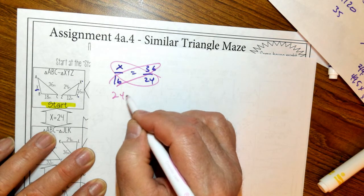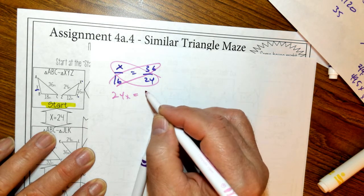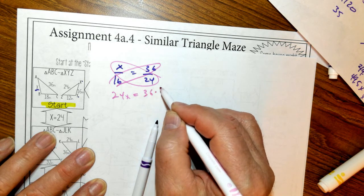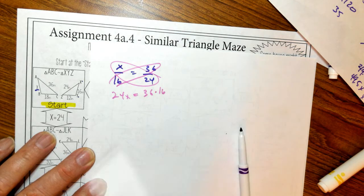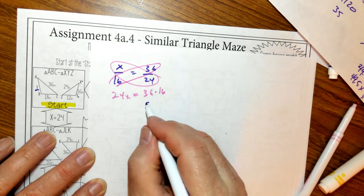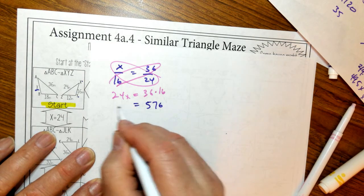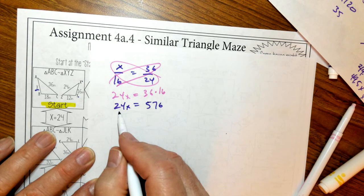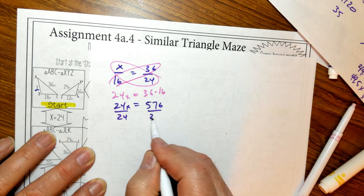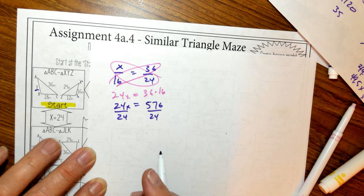This is going to be 24X is equal to 36 times 16. And 36 times 16 is 576. And that's 24X. I'm dividing by 24.